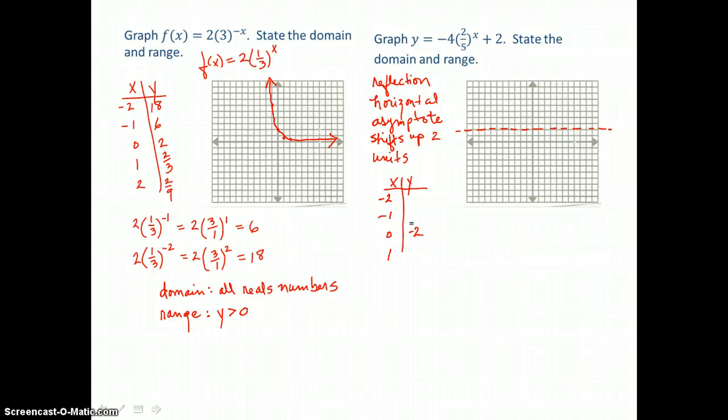Now let's let x equal 1. 2 fifths to the first power is 2 fifths. And 2 fifths times negative 4 is negative 8 fifths. And we're going to add that to 2, which we can write as 10 fifths. So when we add negative 8 fifths to positive 10 fifths, we're going to get positive 2 fifths for a y value.